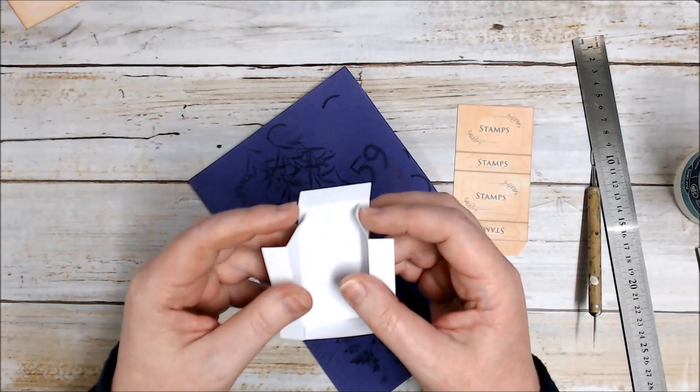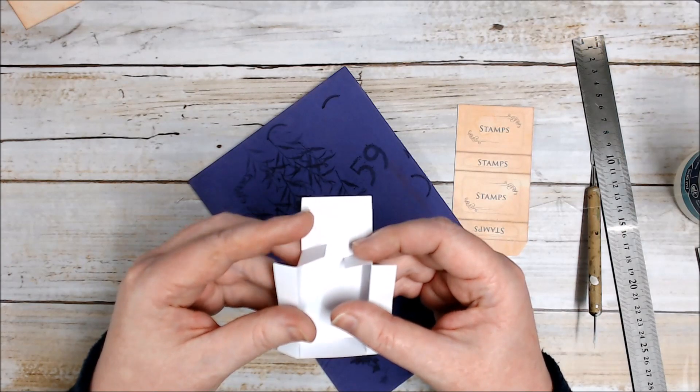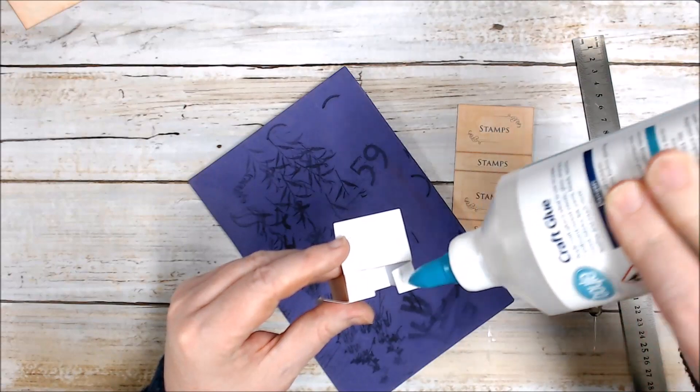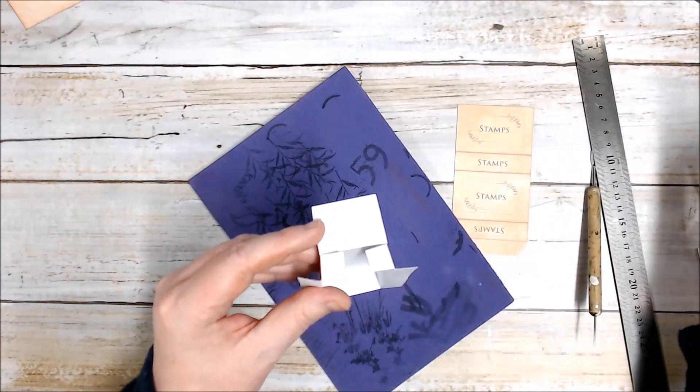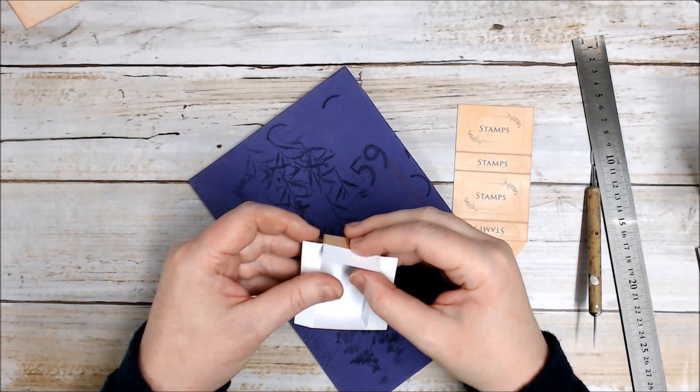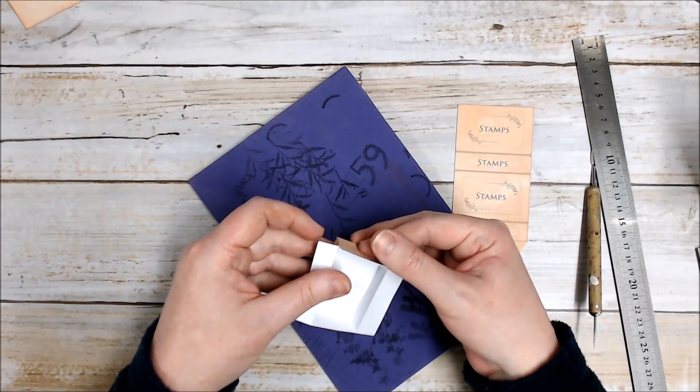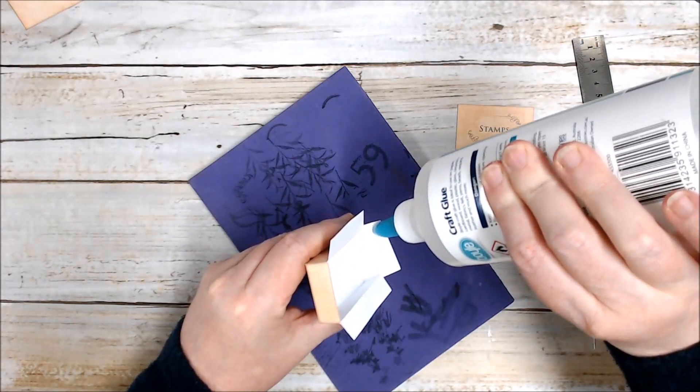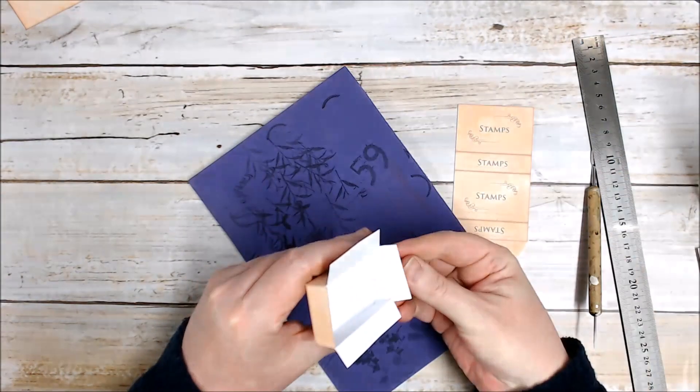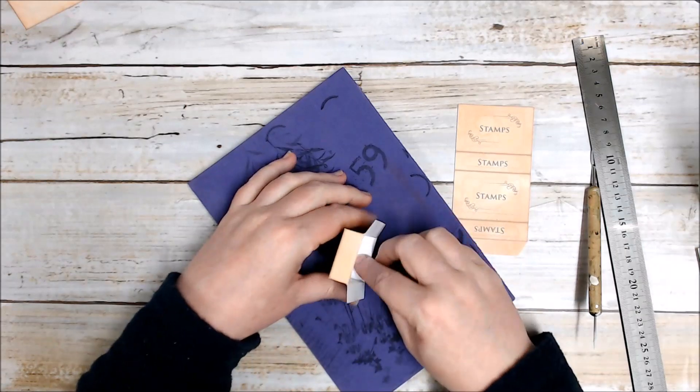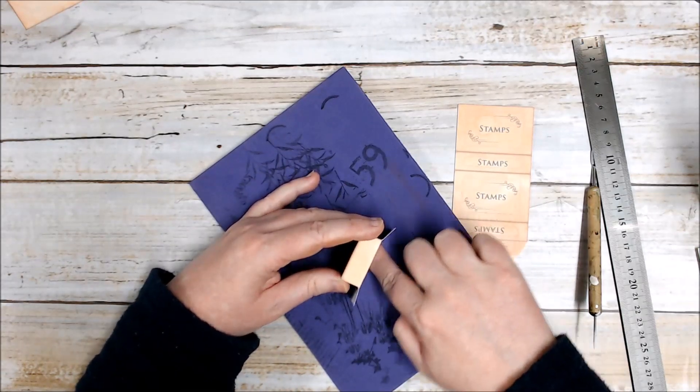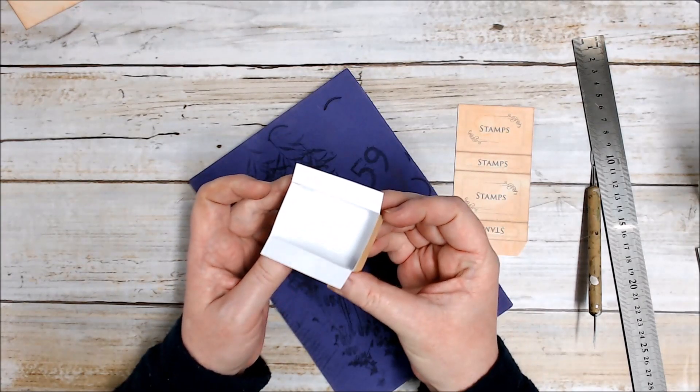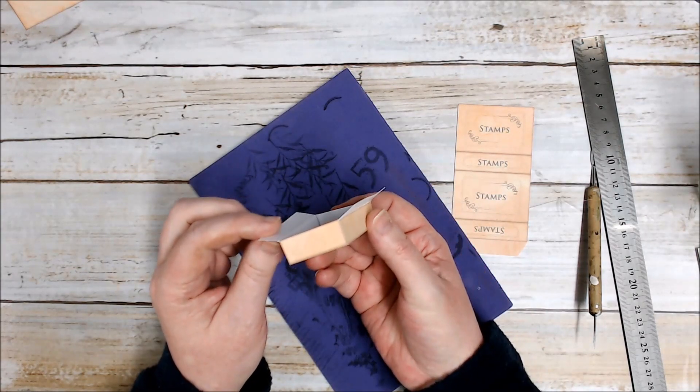Once that glue adheres you can see that we're starting to actually get a matchbox shape there. We're going to do the same on the other side - tuck these two little flaps in, a little bit of glue, fold the end up, a little bit more glue, and then fold that inside and press down.